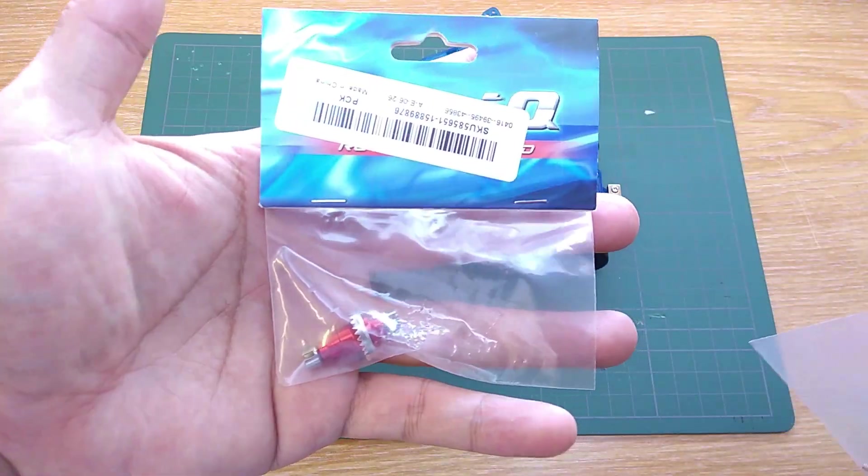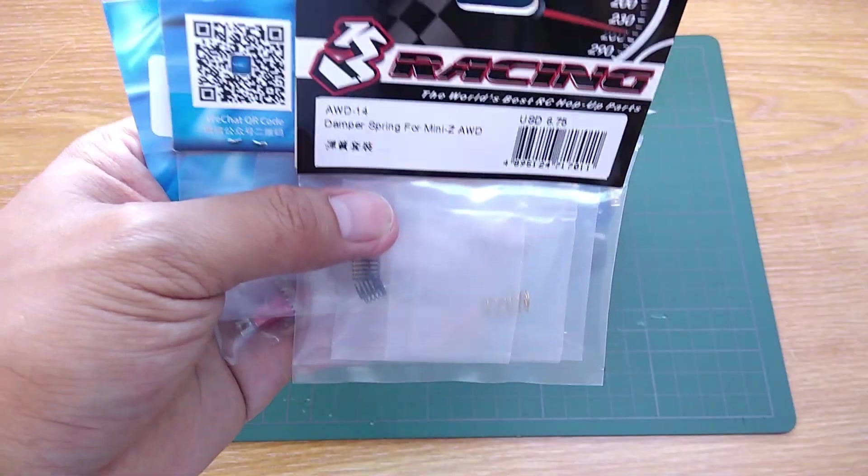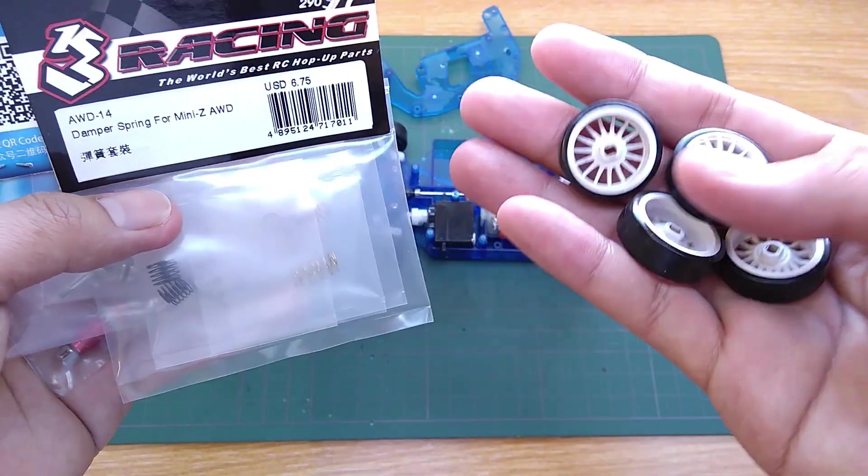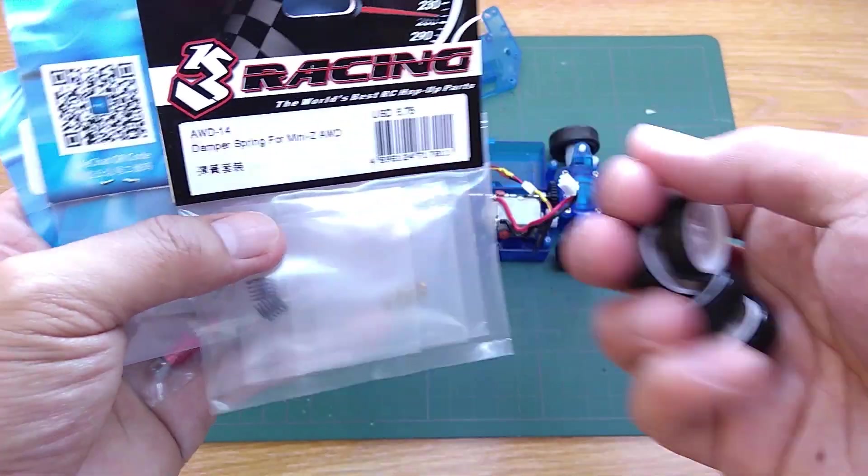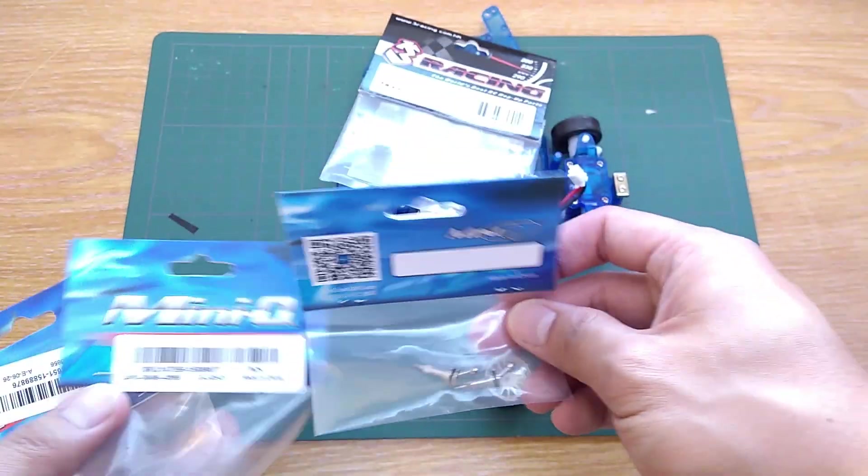I will upgrade 4 things: Front one way, metal swing shafts, tires and the springs all at the same time because I have to disassemble the whole car anyway. So doing everything all at once is easier than keep coming back for each upgrade.